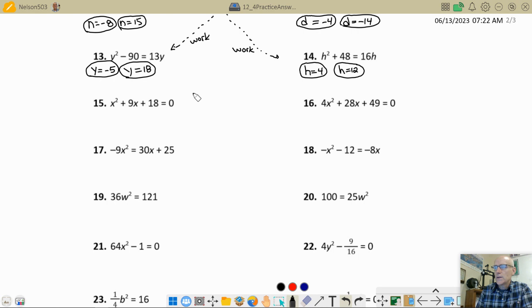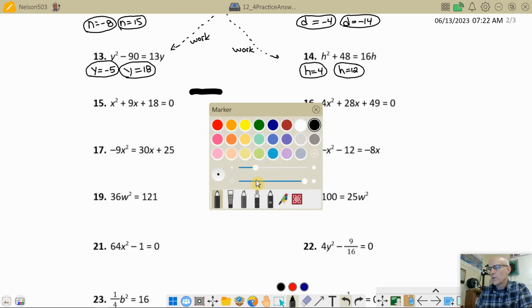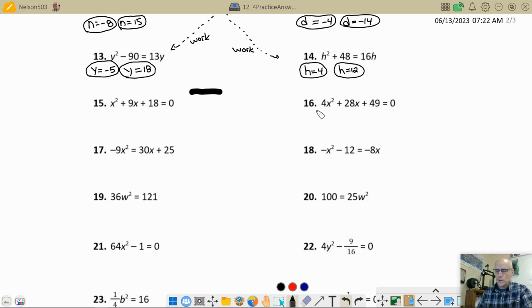So 18, let's see. I want two factors that would multiply together to give me 18 and would add together to give me 9. How about 6 times 3? So 6 times 3 gives me 18 and 6 plus 3 gives me 9. So I have x plus 6, x plus 3, all equals 0. So x equals negative 6, x equals negative 3.